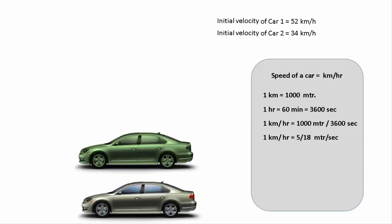So 1 km per hour is equal to 1000 meters over 3600 seconds, and that's equal to 5 over 18 meter per second. Hence, initial velocity of car 1 now becomes 52 times 5 over 18 meter per second, and initial velocity of car 2 is 34 times 5 over 18 meter per second.